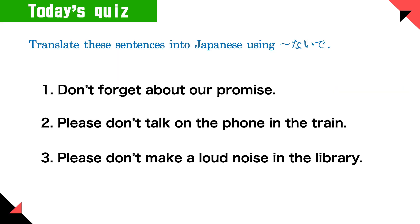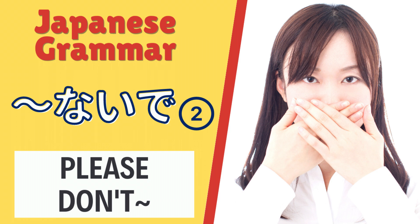Alright, today's quiz — translate these sentences into Japanese using ないで. First: 'Don't forget about our promise.' If you don't know how to say promise, that is yakusoku. Second: 'Please don't talk on the phone in the train.' Third: 'Please don't make a loud noise in the library.' I will leave the example answers in the description. That's it for today. If you have any questions, please leave them in the comments. I hope you learned something new today, and I hope to see you in the next one. Mata ne!